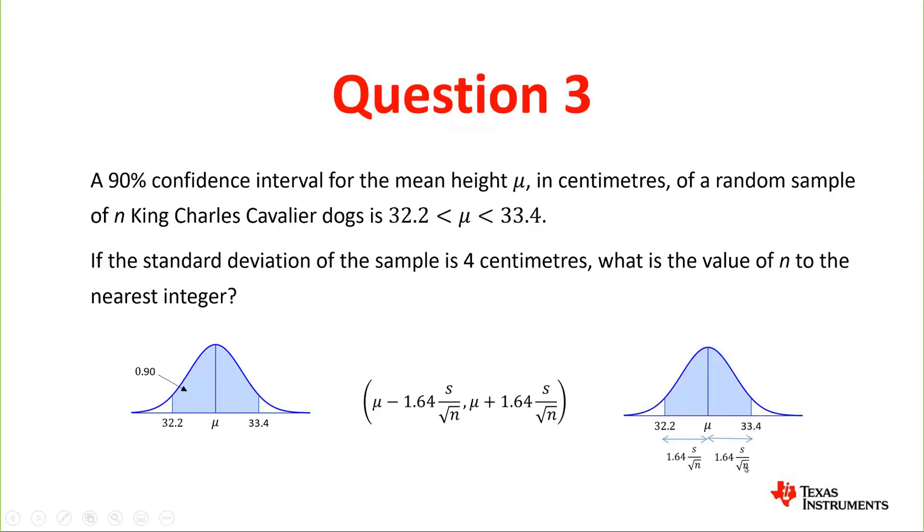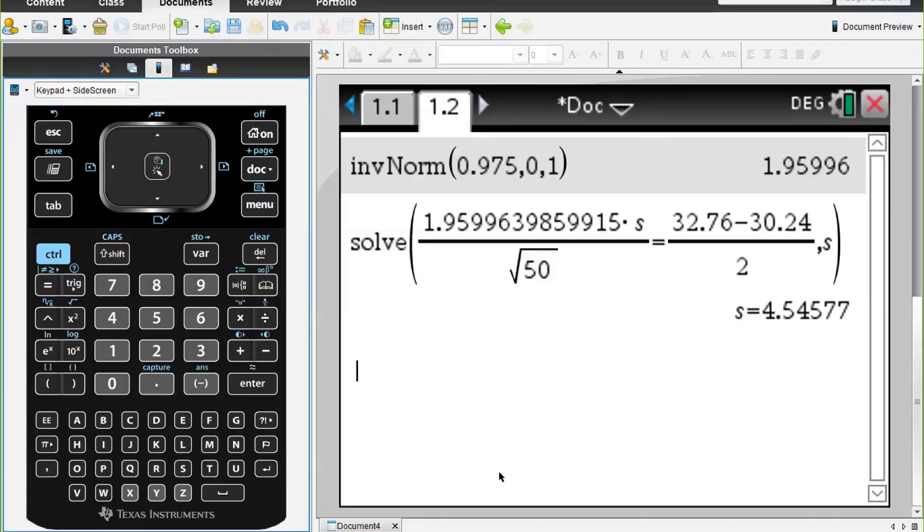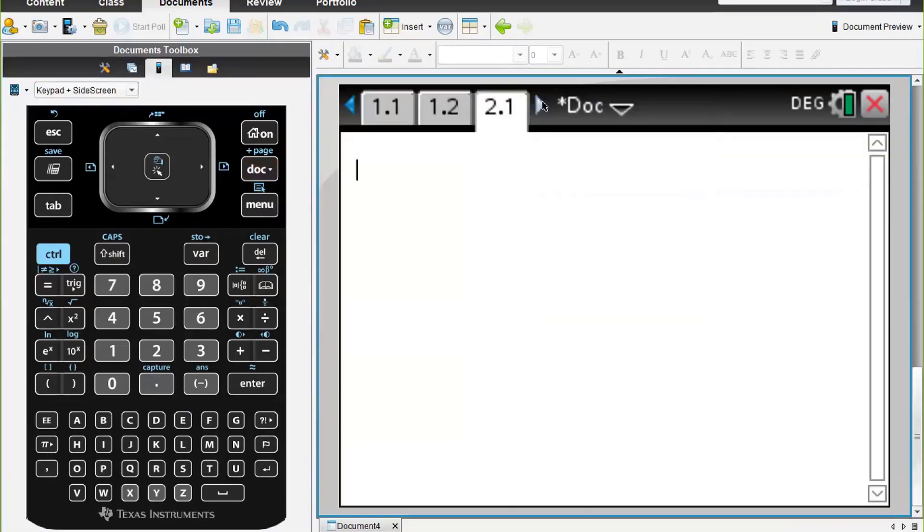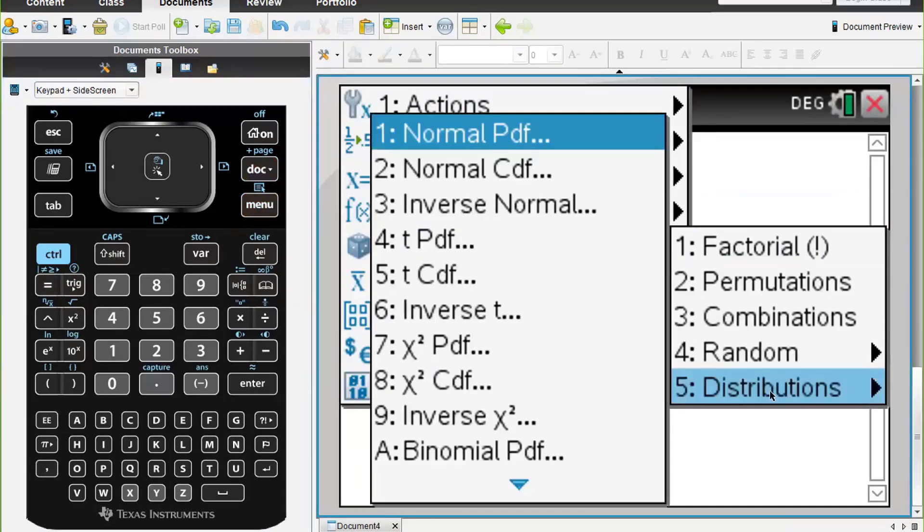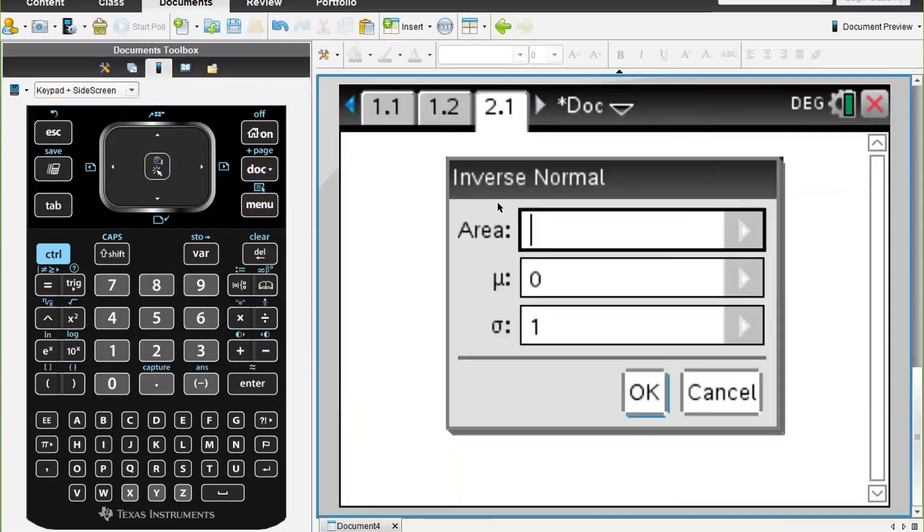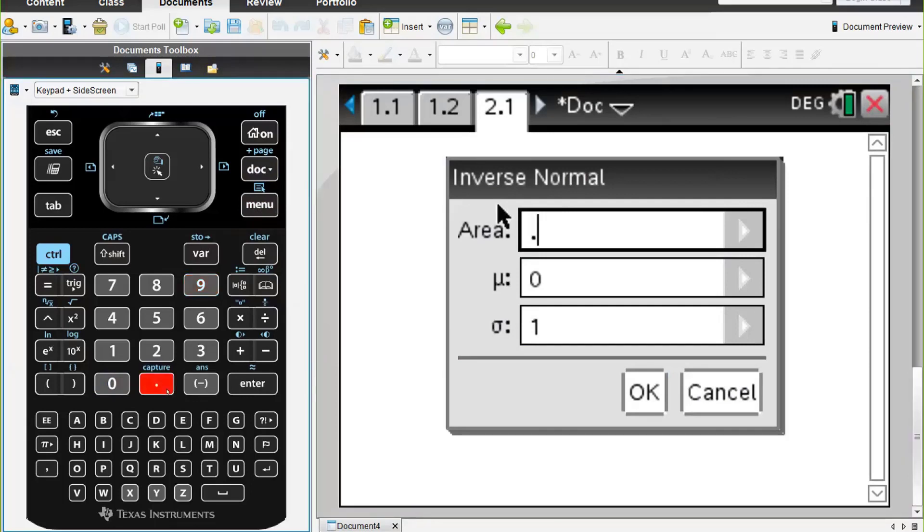We'll just put in a new page. We're going to have a look at our z-value, so Menu, Probability Distributions, and Inverse Normal. We want to put in this time 0.95 for a 90% interval. And we get 1.64485, so rather than just use the 1.64, I've got a bit more accuracy here just in case it's going to play a part in our calculation.